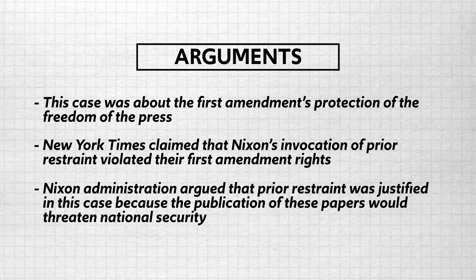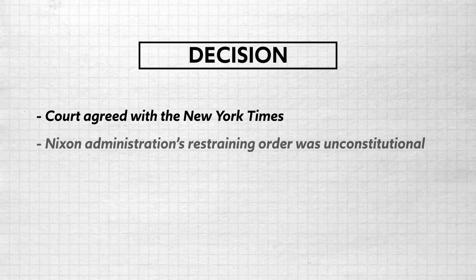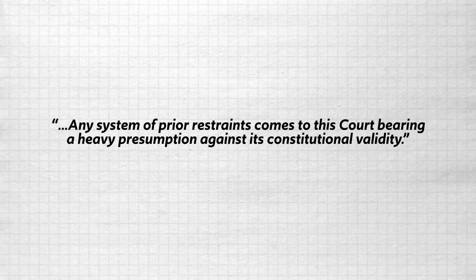So what was the decision? The court agreed with the New York Times that the Nixon administration's restraining order was unconstitutional, and therefore allowed the paper to continue printing the Pentagon Papers. In the opinion handed down by the court, they said that quote, any system of prior restraints comes to this court bearing a heavy presumption against its constitutional validity. In other words, whenever a case involving the freedom of the press comes before the court, the bar to clear for prior restraint is very high.